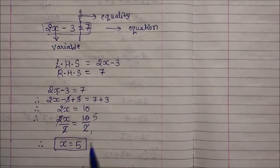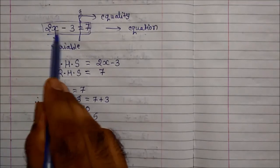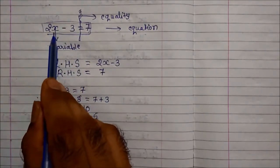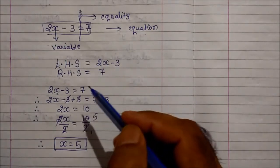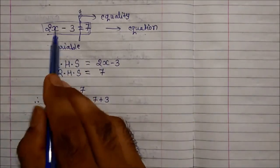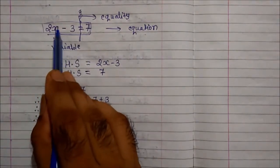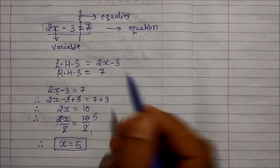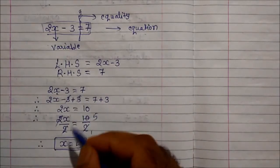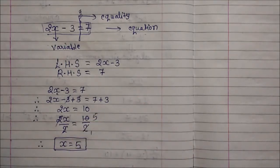So value of x is 5. So 5 is known as the solution of this particular equation 2x-3=7. The solution of 2x-3 is equal to 7 is 5. This is nothing but solving an equation with one variable — this is a linear equation, because the index, power, or exponent of the variable is 1. Therefore it is known as a linear equation, and solving of linear equations with one variable is what we are going to learn in this chapter.